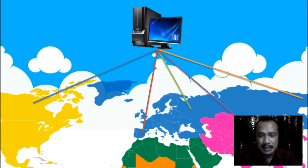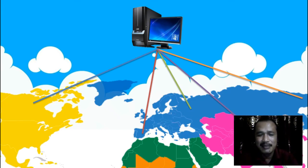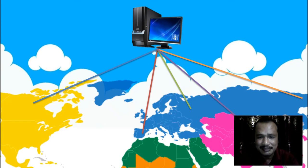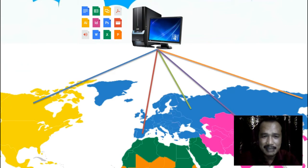Ini adalah diagram bagaimana Cloud Computing dapat menguasai dunia. Sebuah perangkat sistem informasi akan dapat menjangkau ke seluruh daerah, selama daerah tersebut bisa tersambung dengan internet. Dan aplikasi-aplikasinya bisa kalian lihat di layar monitor kalian.